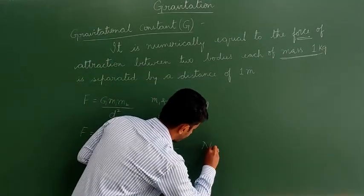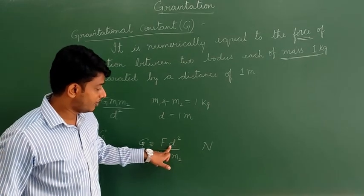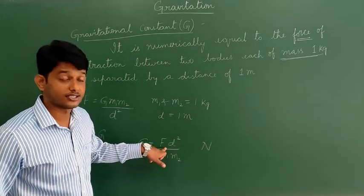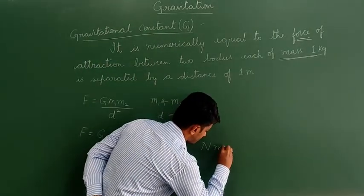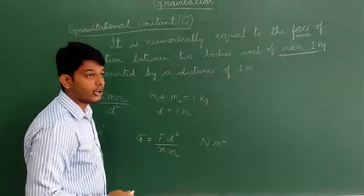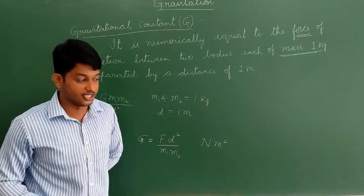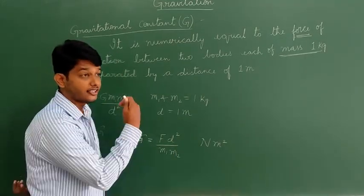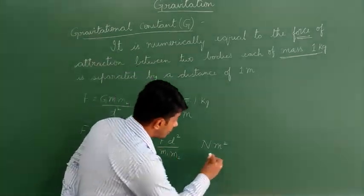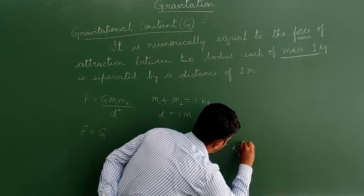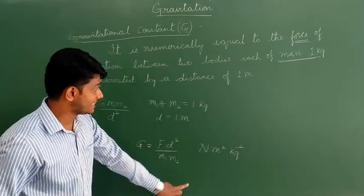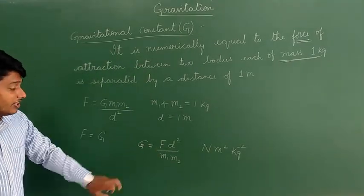The SI unit for force is Newton, for distance is meter, so distance squared is meter². The SI unit for mass is kg, and since M1 and M2 are in the denominator, they become kg to the power of minus 2. So the SI unit of G is Newton·meter²·kg⁻².